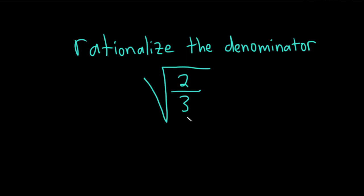So to do this, there's a couple ways to do it. The first way is to multiply by 3 over 3.